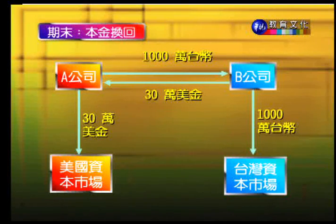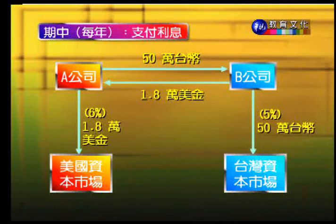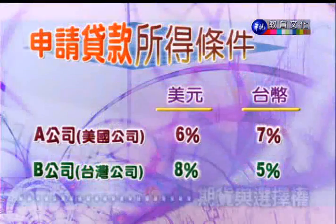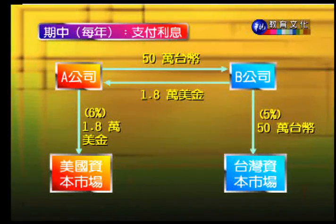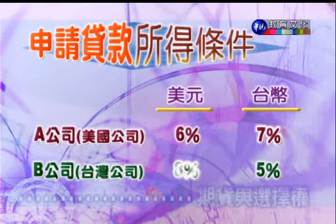到了期末再把本金换回来，互相把当时所借的原始本金交还给对方。货币交换的结果：对A公司来讲，它把原来6%的美元贷款转换成5%的台币贷款，比起直接借台币的贷款7%，节省了1%。B公司把原来5%的台币贷款换成6%的美元贷款，也比起直接去借美元的贷款节省了2%。这就是货币交换基本的架构。